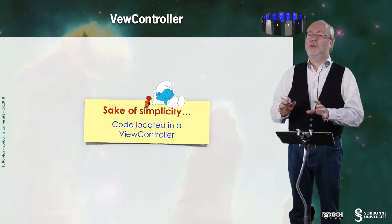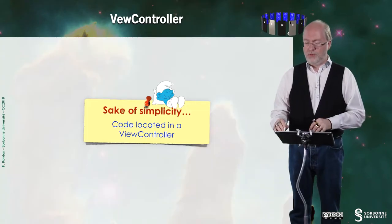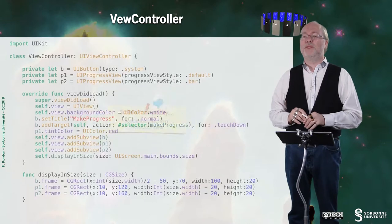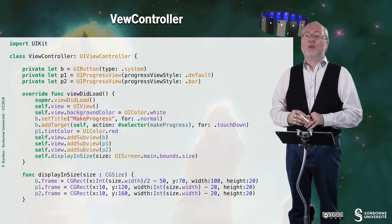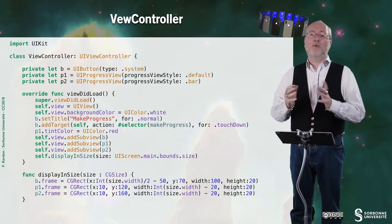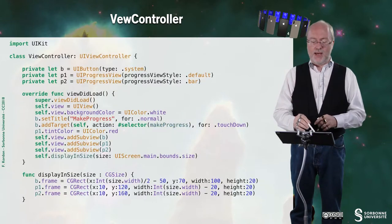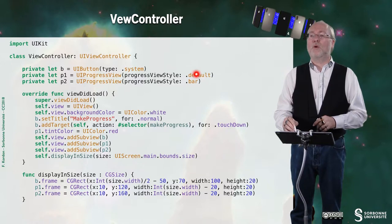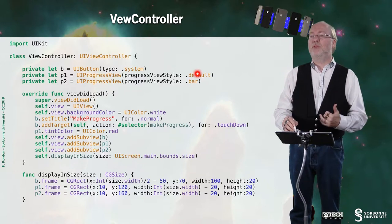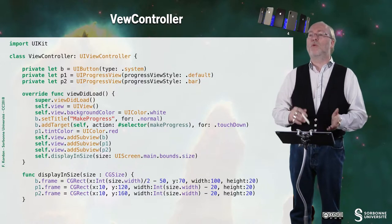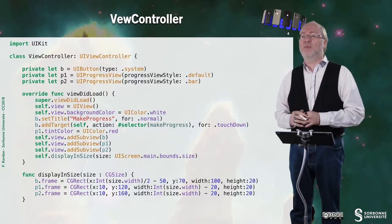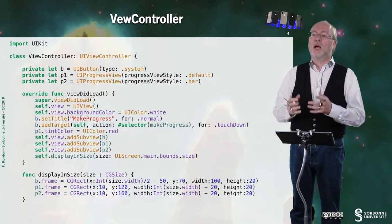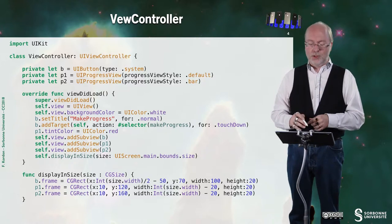Everything has been implemented in the view controller for simplicity. It's quite easy: I have two progress views — one with default configuration, one set up as a bar configuration — and a button.